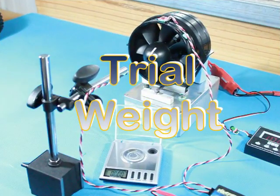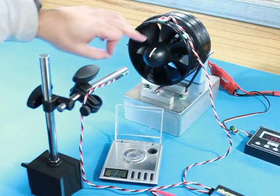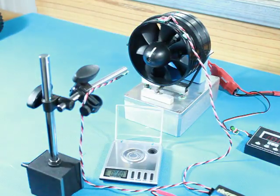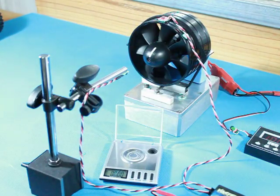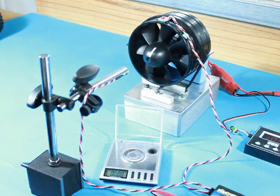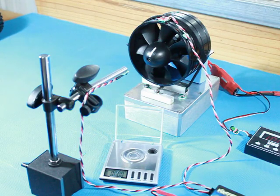The next step is to apply a trial weight to the zero reference position on the hub of the ducted fan unit. Again, the desired weight can be anything you wish. Anything less than one gram for this particular application should be fine.